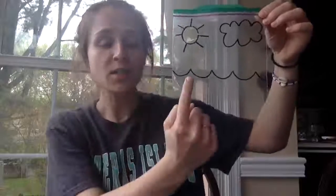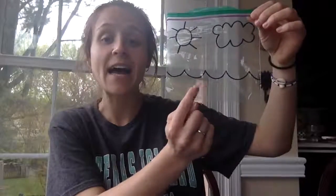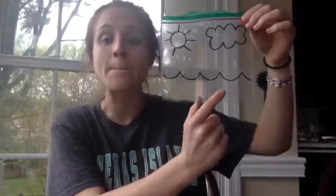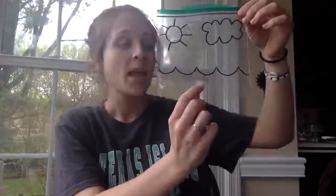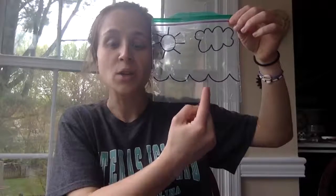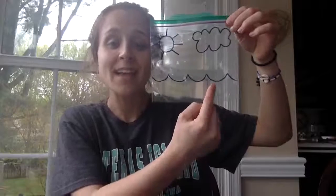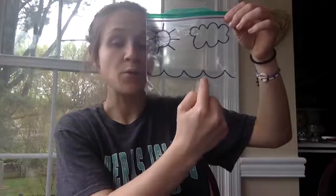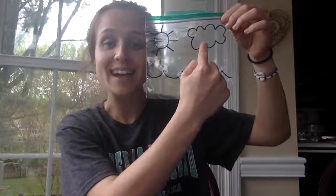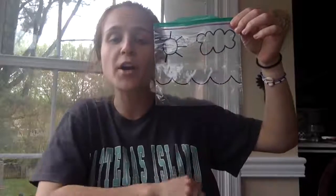This is how the water cycle works. If we have a body of water, like the ocean, a pond, or a lake, and the sun heats up that water and gets it really warm, the water is going to evaporate and turn into a gas. So it rises up into the sky, and in the sky the water condenses. Can you guys say condense? Nice job! It condenses.